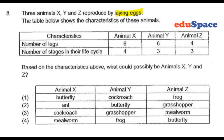So judging from this, we could tell that option 1 or 4 would be the answer, as both these animals are the only ones that have 4 stages in their life cycle.